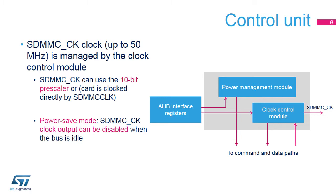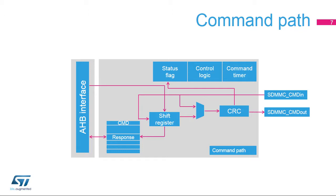The control unit can disable SDMMC-CK generation when the bus is idle. The command path circuit is used to program a command response sequence. When enabled, the command path shifts out the command index and argument on the SDMMC-CMD pin. After the last payload bit is sent, a CRC-7 is computed and sent on the bus before generating the end bit. SDMMC-CMD-IN and SDMMC-CMD-OUT are two modes indicating how the SDMMC-CMD pin is working.